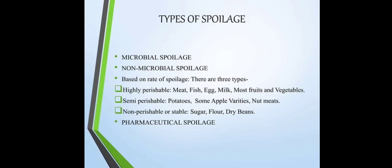For example, semi-perishable products include potato and some apple varieties. Non-perishable or stable products include sugar, flour, etc. The next category is pharmaceutical spoilage.